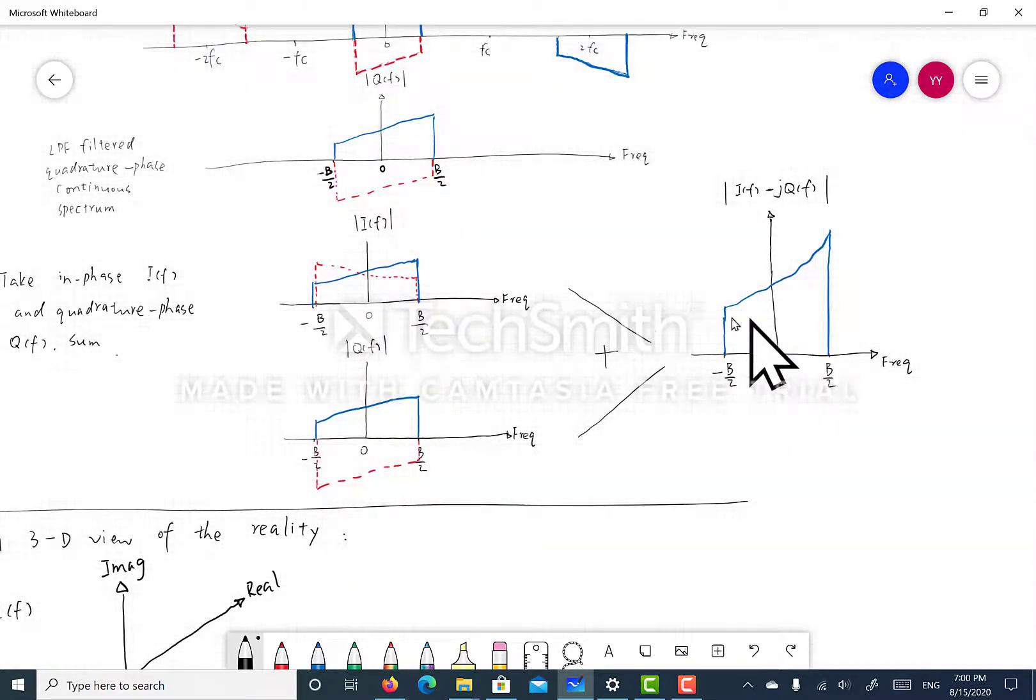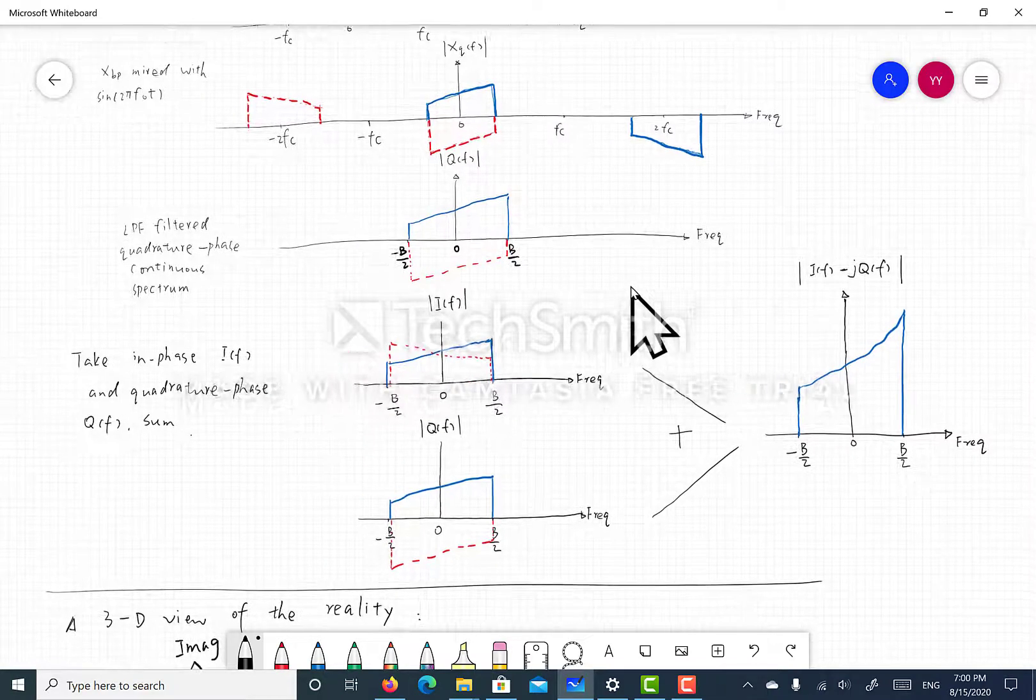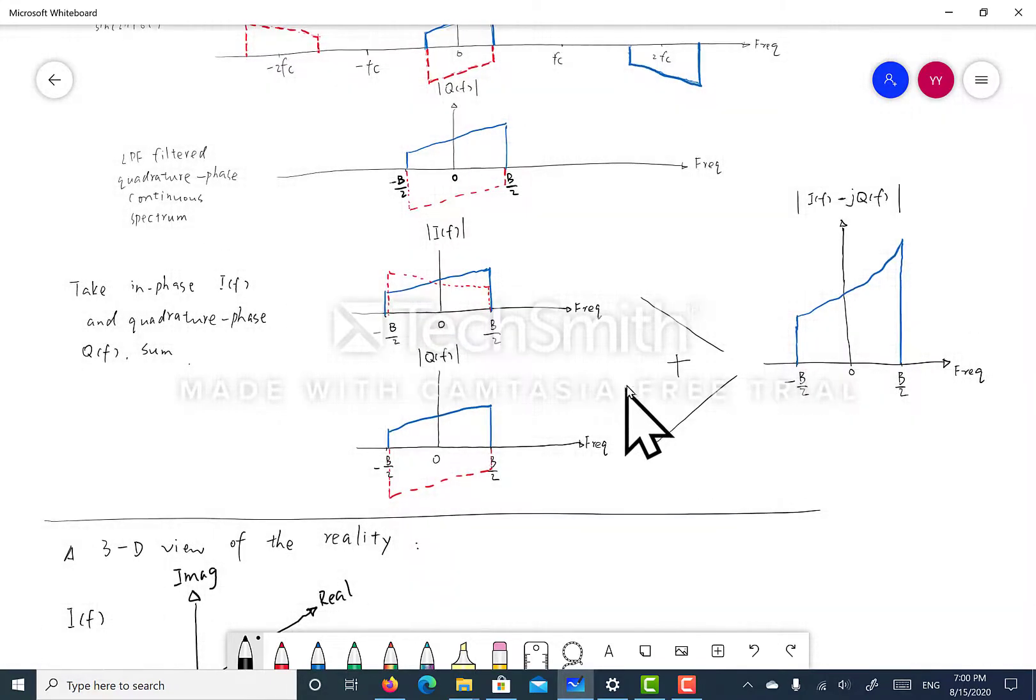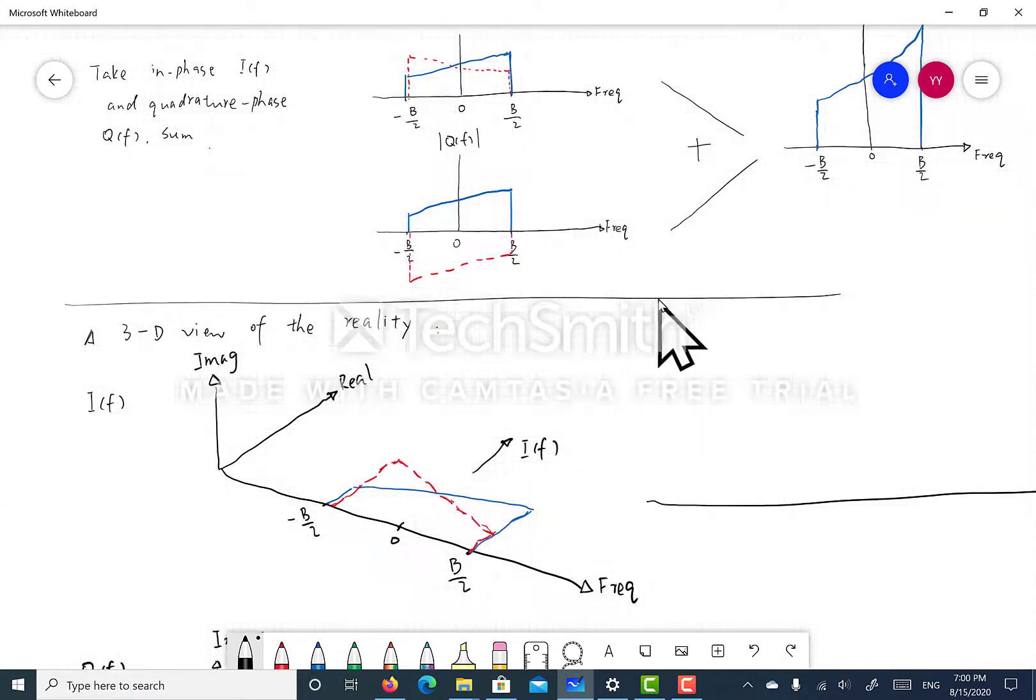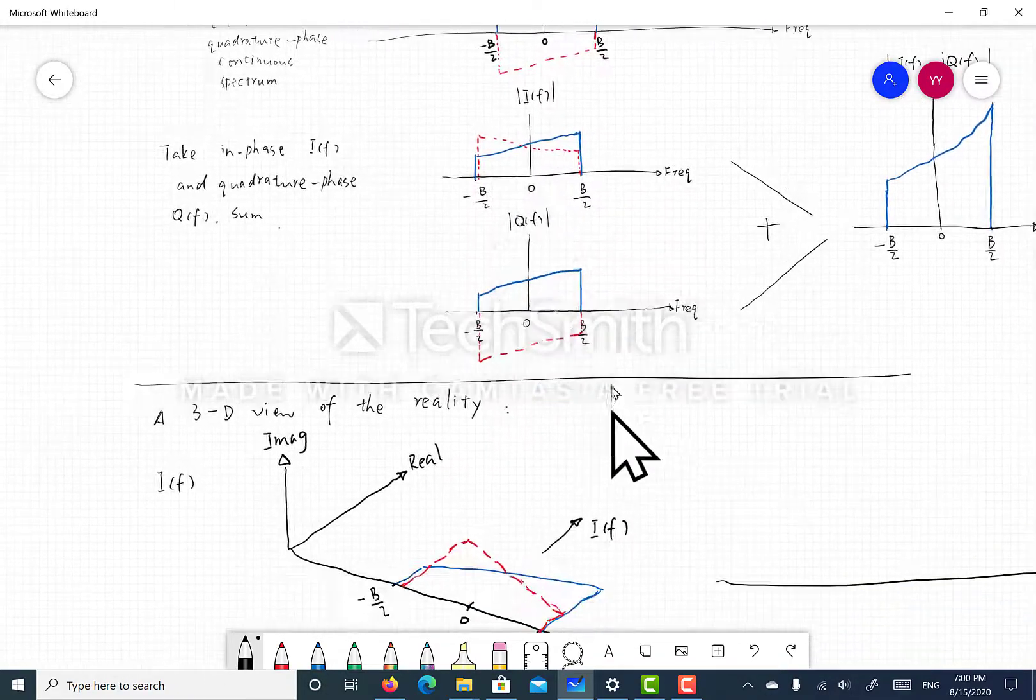I will explain what was really happening here. What was really happening is that the frequency domain mixing actually happens in a three-dimensional space. But if we plot them in two-dimensional coordinates, we're actually looking at the projection of the three-dimensional phenomenon in a two-dimensional space. So to truly understand what is happening, to truly understand the reality, we need to plot everything here in three dimensions.